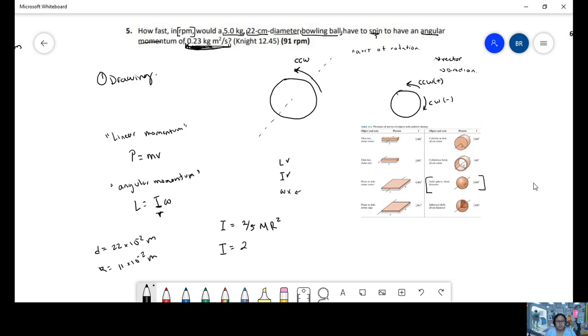Angular momentum is two-fifths mass radius squared. I'm going to calculate that.